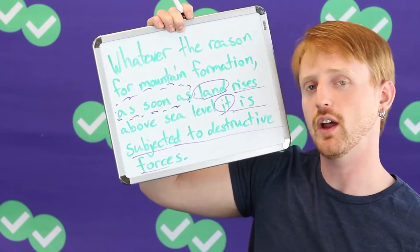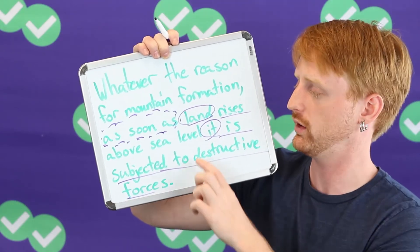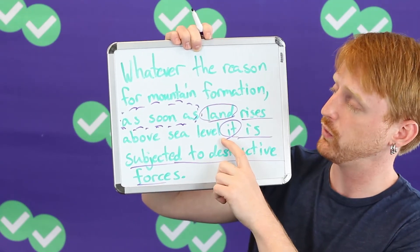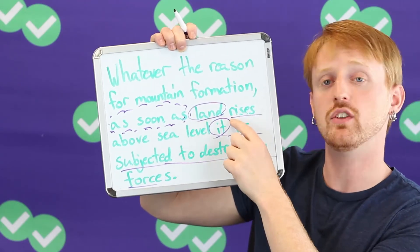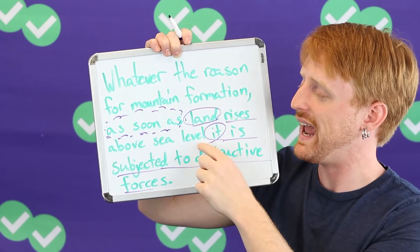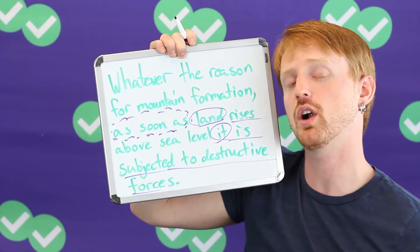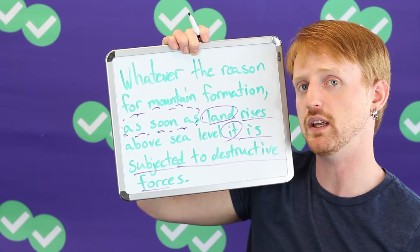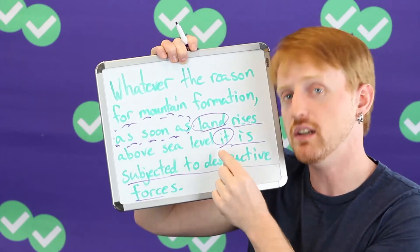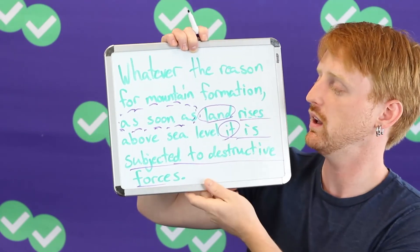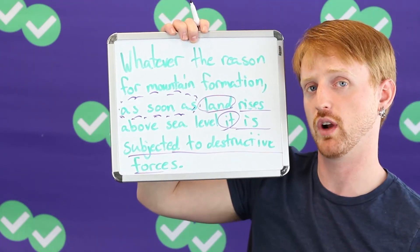What does 'it' refer to? What is it? That is what is important. So 'it' refers back to land: land rises and land is subjected. This dependent clause that comes earlier can be important in how it relates to the independent clause.